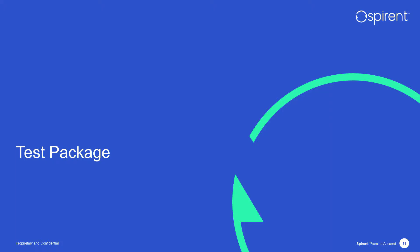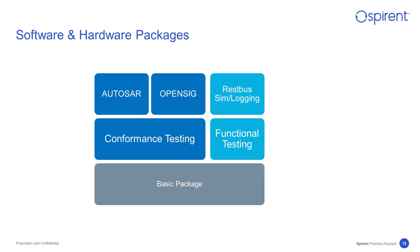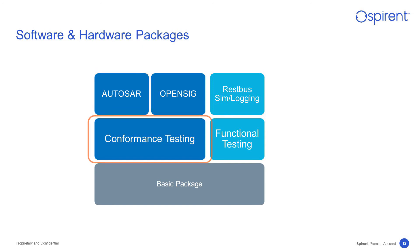Now let's review what's in the test package. It contains the basic components like SPIRINT Test Center Virtual, AutoSAR, and open test suites for conformance testing. The CAN Dev Studio for CAN traffic analysis is open source software and can be installed on COMTT.